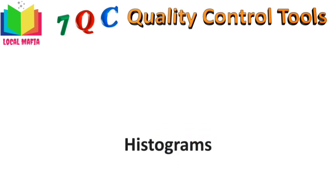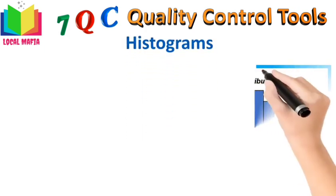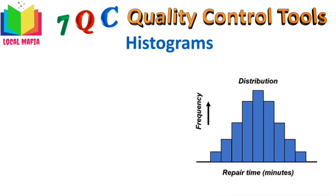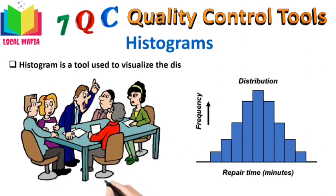Histograms: A histogram is a graph that shows how often a value or a range of values occurs within a given period of time. Histograms provide a visual summary of a large amount of variable data, where each bar represents an attribute of a problem or situation and the height of a bar represents its frequency. It was first introduced by Karl Pearson and is used to tell if the process meets the customer requirement or not. It is a tool used to visualize the distribution of continuous data.